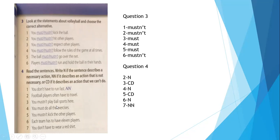Read the sentences and write N if the sentence describes a necessary action. Write NN (double N) if the action is not necessary. Write CD if it describes something you can do — CD stands for 'can do'. So: N for necessary, NN for not necessary, CD for can do.